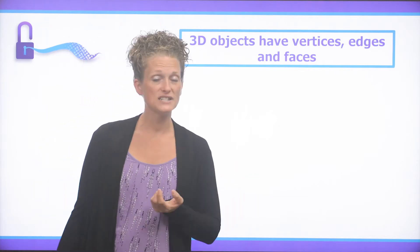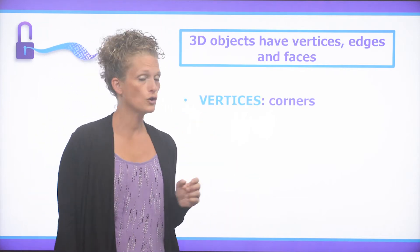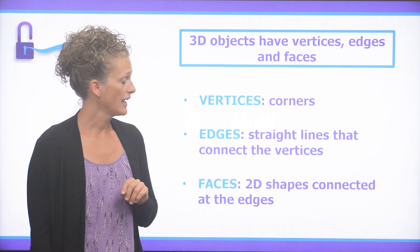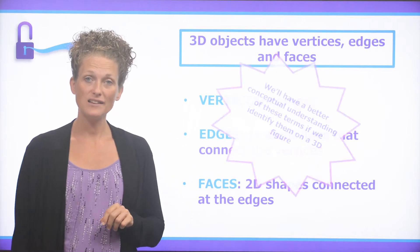So 3D objects have vertices, edges, and faces. Vertices are the corners. Edges are the straight lines that connect the vertices. And the faces are the 2D shapes connected at the edges.